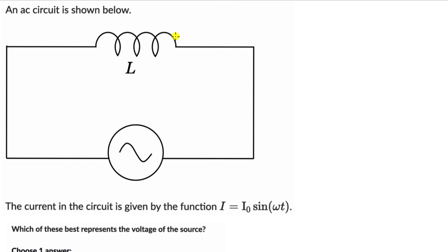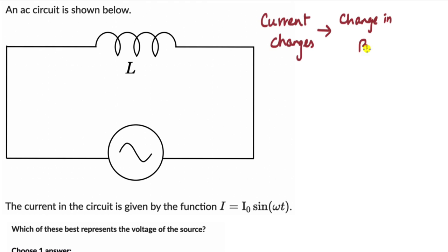That implies that the flux of the magnetic field through these coils also changes as the current is changing. There is current which changes, leading to a change in the magnetic field, and that leads to a change in flux. From Faraday's law, whenever there is a change in flux through a coil, the coil responds by opposing the change in flux.